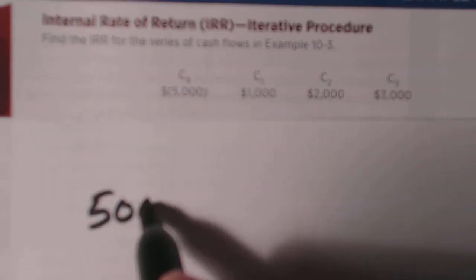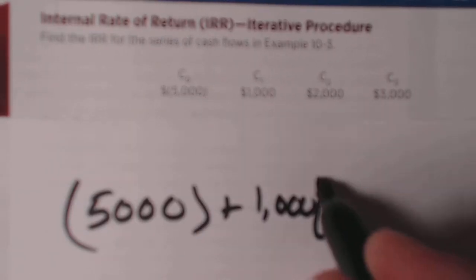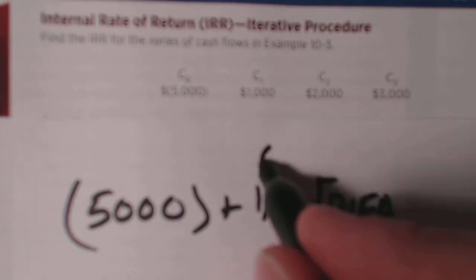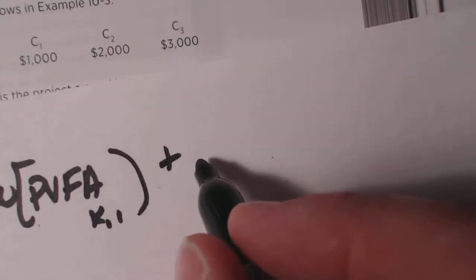So that becomes a negative $5,000 plus 1,000 and it's a PVFA. Now this would be, since this is C1, it would be a PVFA of K1.